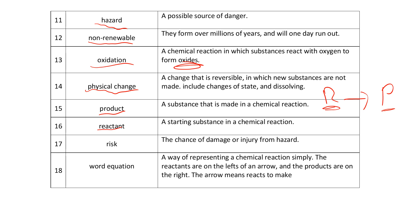The chance of damage or injury from a hazard is a risk. Science teachers always think of the risk in a practical. A way of representing a chemical reaction with reactants on the left of the arrow and products on the right is a word equation.